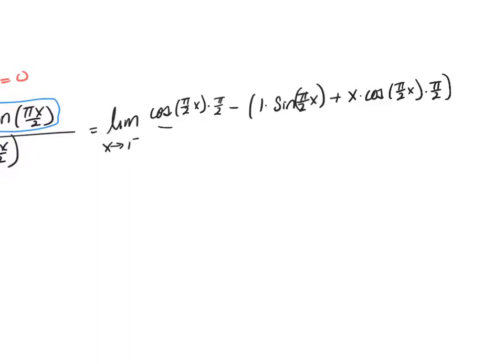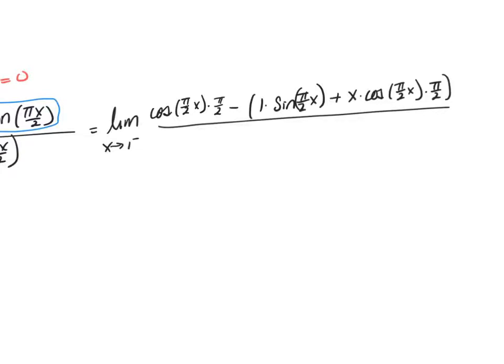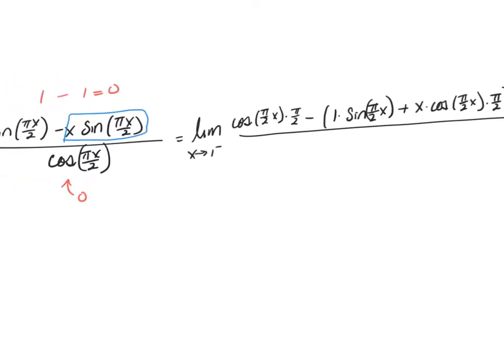Then I do the derivative of the denominator. The denominator started out as cosine, so its derivative is going to be negative sine of πx/2, multiplied by the derivative of the angle, which is π over 2.